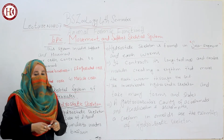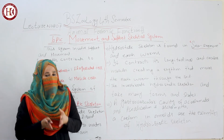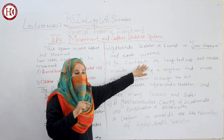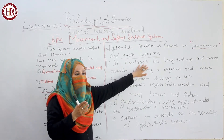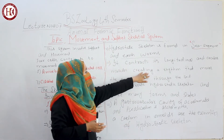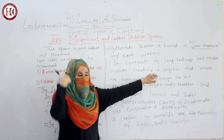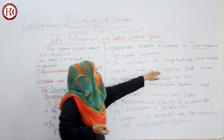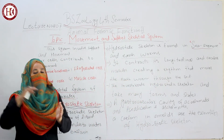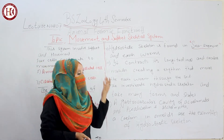These are the main functions performed by the hydrostatic skeleton. It contracts and relaxes for the purpose of movement. Its longitudinal muscles — lengthwise — and circular muscles — widthwise — create a rhythm that moves the earthworm in the forward direction through the soil.